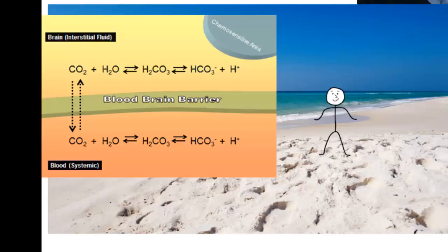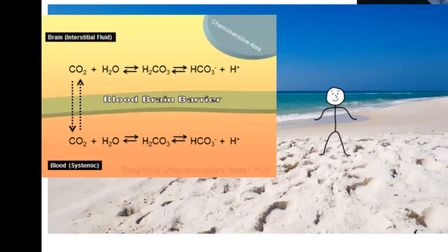In contrast, the peripheral chemoreceptors — which aren't shown in this image — are in direct communication with arterial blood, and they're sensitive to partial pressures of carbon dioxide, the plasma pH, and most importantly, the partial pressure of oxygen. The peripheral chemoreceptors are solely responsible for driving our rate of ventilation based upon oxygen demands. However, at sea level, when oxygen is in abundance, the main ventilatory drive at rest on a moment-to-moment basis is determined by the central chemoreceptors based on how much CO2 we need to get rid of.